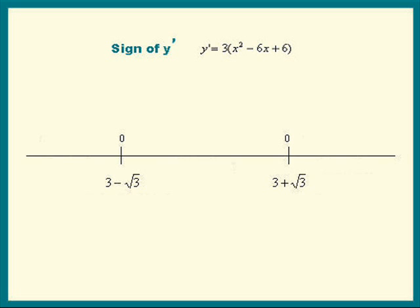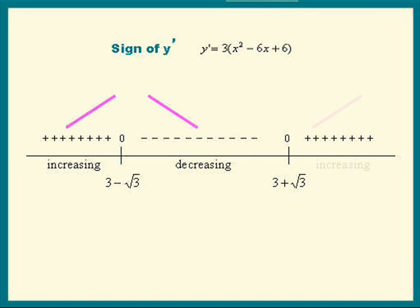When we do that, we find that on the left side, y' is positive. In the middle, y' is negative. And on the right side, y' is positive. So it shows us that the graph is increasing, decreasing, and then increasing again.